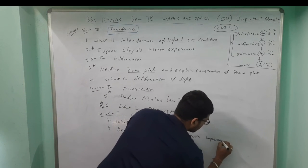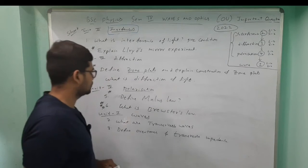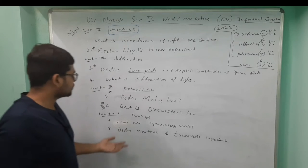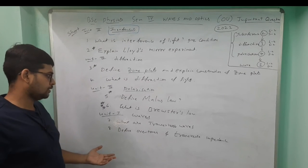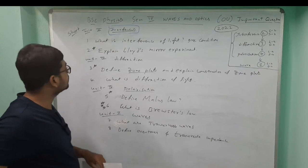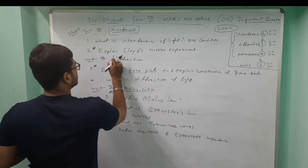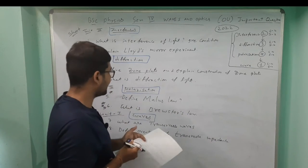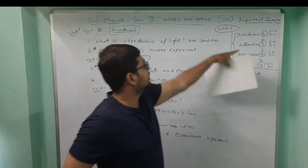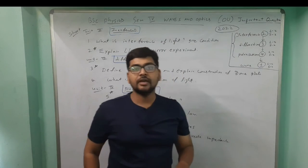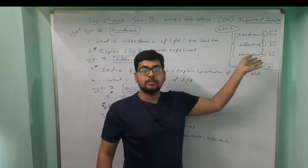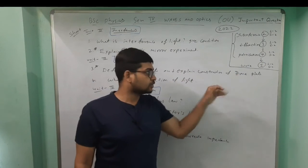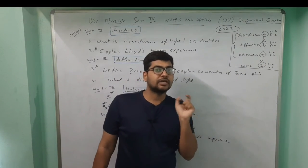So these are the short answer and long answer questions. These are the important questions. I am specifically writing the unit names — Interference, Diffraction, Polarization, and Waves — because this video is a helper for everybody studying Waves and Optics. Two years back there was a different question paper with different unit names, so be aware of the current syllabus.